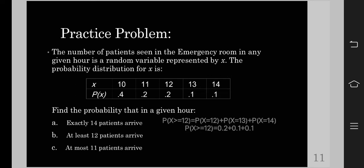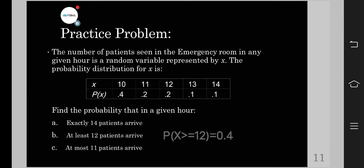So in this case, we're going to add the probabilities for 12, and that will be 0.2 plus 0.1 plus 0.1, and that will be 0.4.